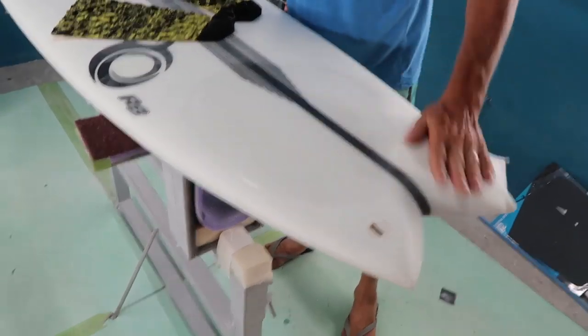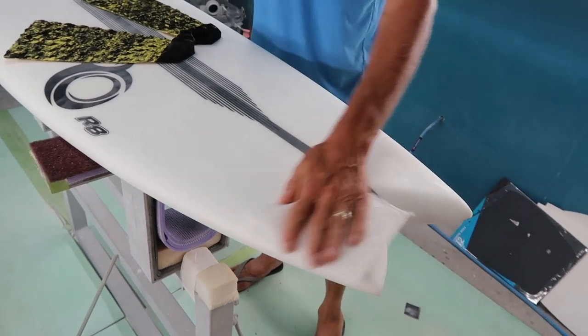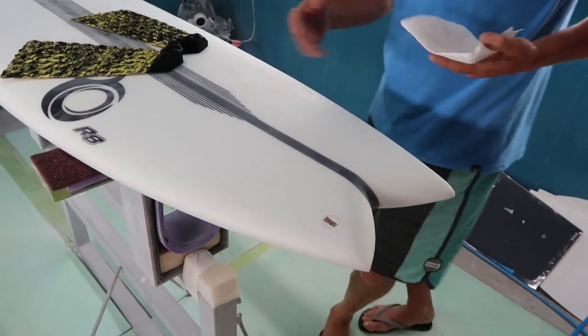A little alcohol on a rag because this dries really quick, we're just going to get all the dust and particles off. And then it's ready to stick but we'll give it a second to dry.